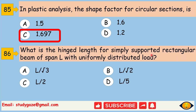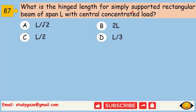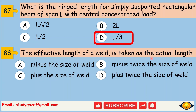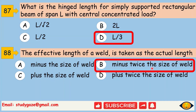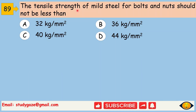The hinge length for a simply supported rectangular beam of span L with uniformly distributed load is L by root 3. Next, the hinge length for a simply supported rectangular beam of span L with central concentrated load is L by 3. Next, the effective length of a weld is taken as the actual length minus twice the size of the weld. Next, the tensile strength of mild steel for bolts and nuts should not be less than 44 kg per mm².